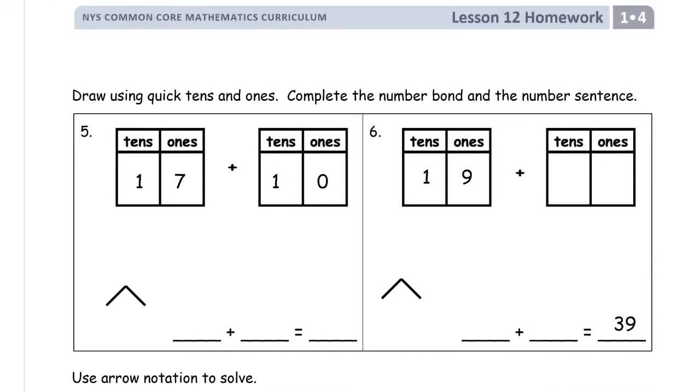On the next page, draw using quick tens and ones. Complete the number bond and the number sentence. So we're going to draw the picture, finish the number bond, and finish the number sentence.